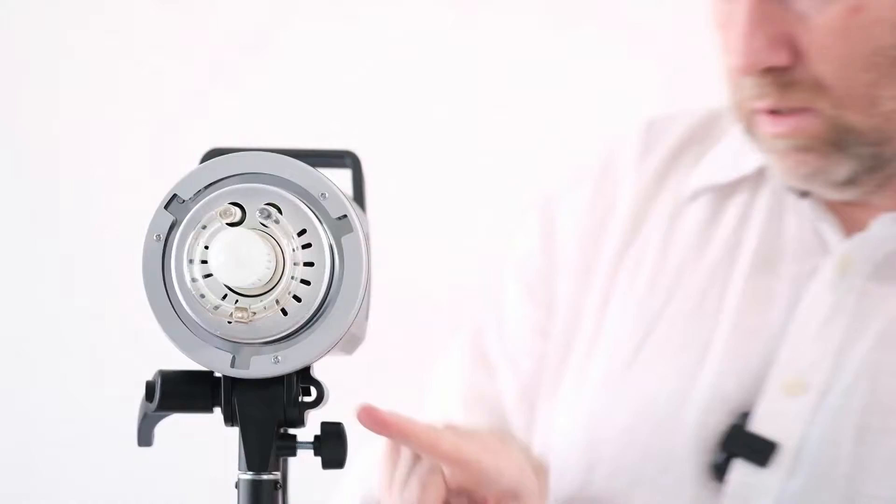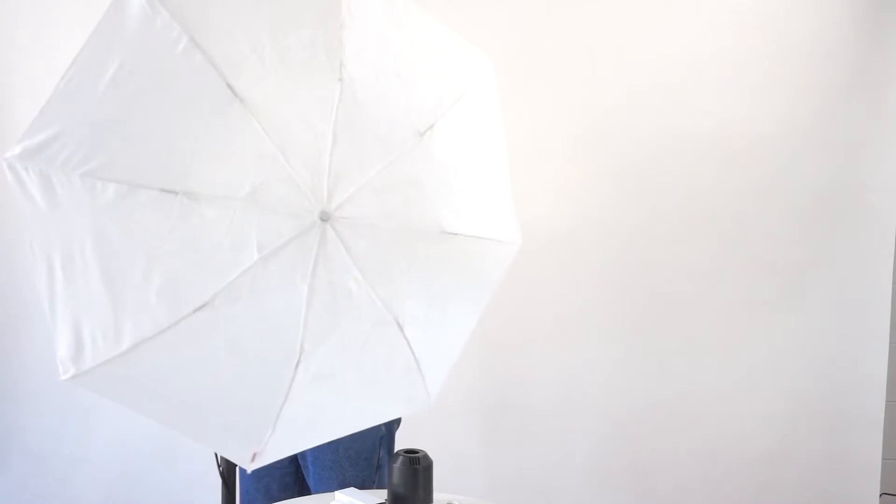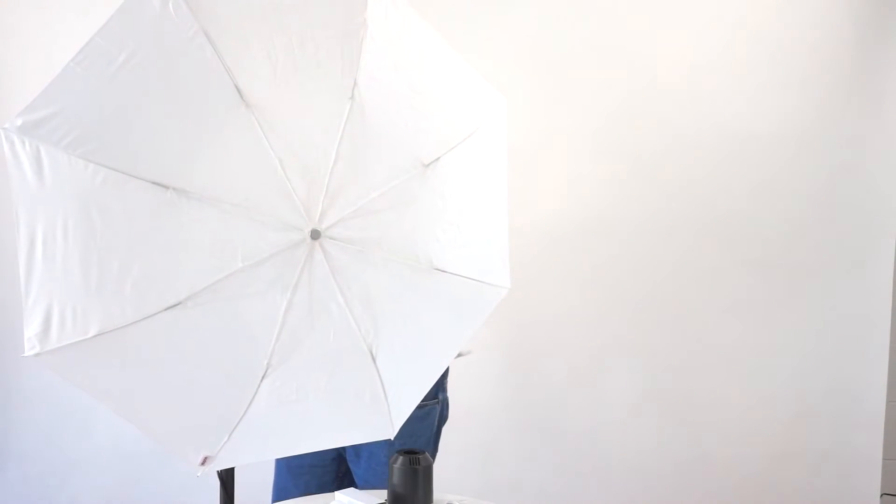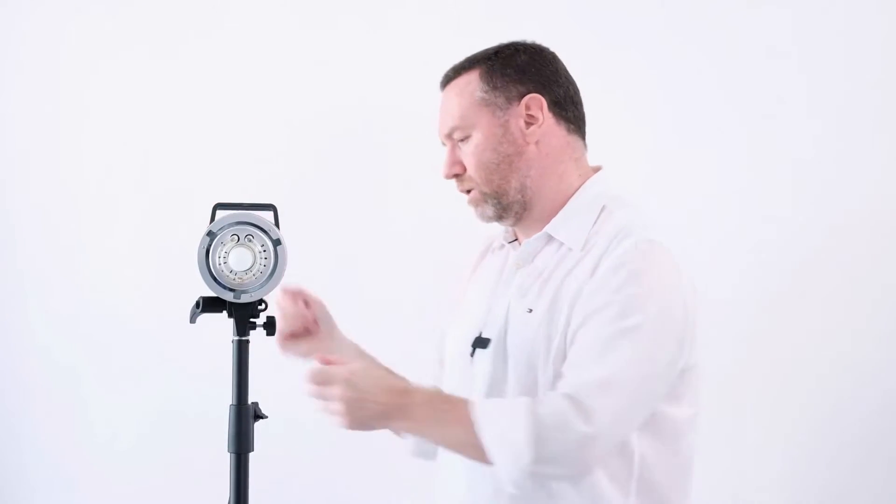So this does have an umbrella mount on it. So I've got a Godox umbrella, collapsible umbrella here. That hole right here is the umbrella mount. All right so that's always your simplest modifier to put on the front of any flash. And obviously you can put actual Bowens mount attachments on the front of this rather than umbrella.